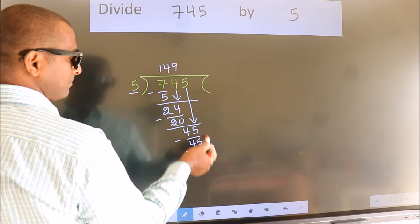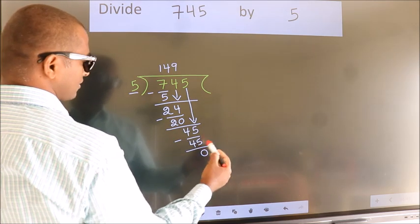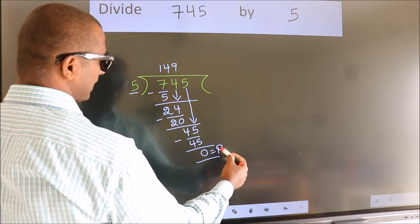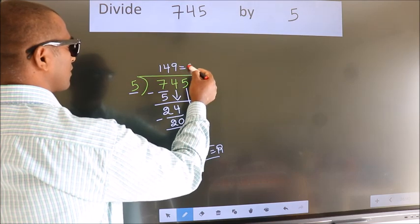No more numbers to bring it down. So we stop here. This is our remainder. This is our quotient.